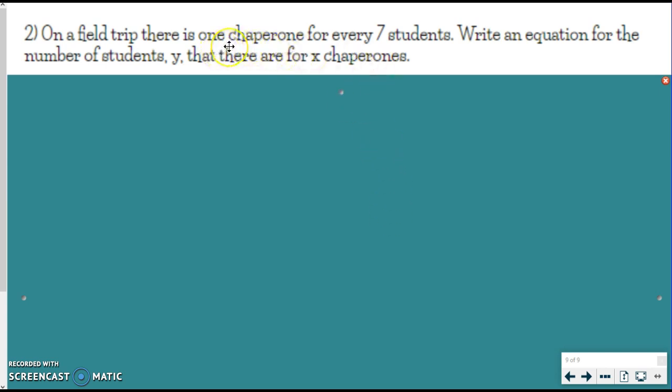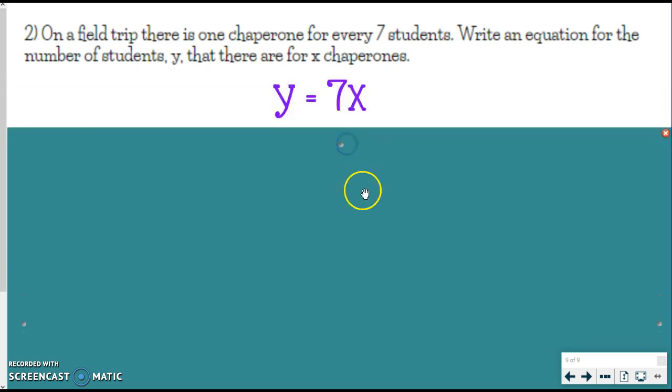So we have one chaperone. They're very nice and gave us one to make it easy. And we know there's 7 for every 7 students. So that means every time I get a new chaperone, I'm going to have 7 more students, etc. And so we get Y equals 7X. Real simple. I'm sure you were able to figure that out.